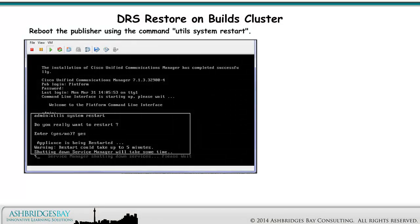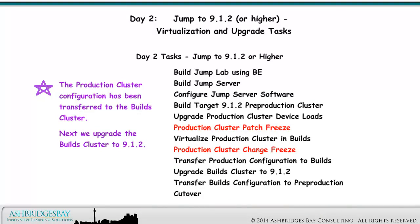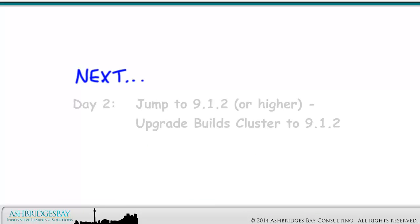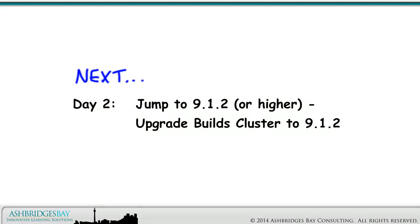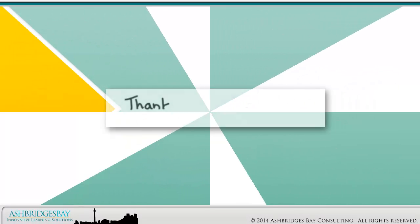Reboot the publisher using the command Utils System Restart. Connect to the other servers in the cluster and reboot them as well. The Production Cluster configuration has been transferred to the Builds cluster. Next, we upgrade the Builds cluster to 9.1.2. Coming up next: Jump to 9.1.2 or higher — upgrade Builds cluster to 9.1.2.